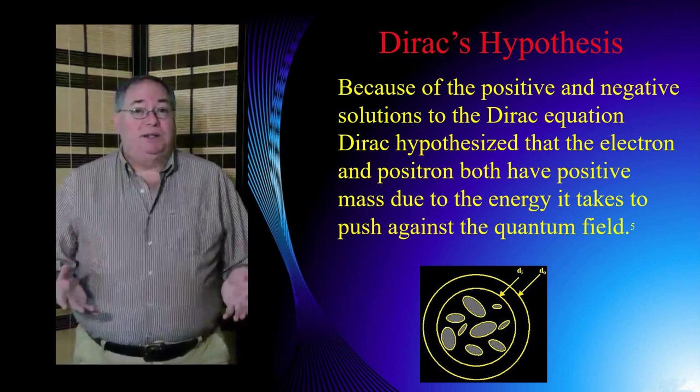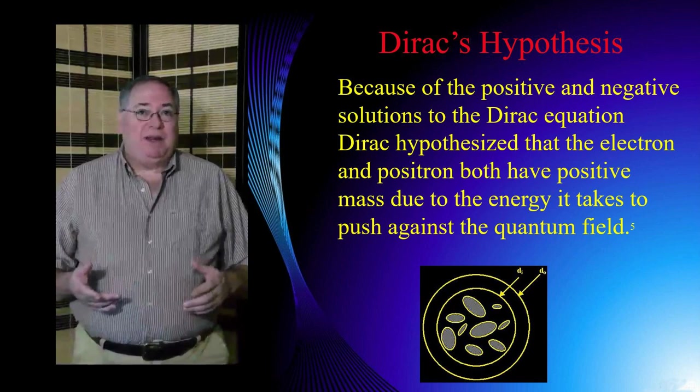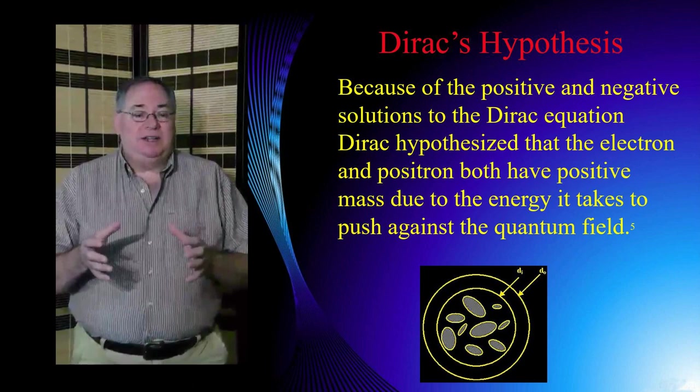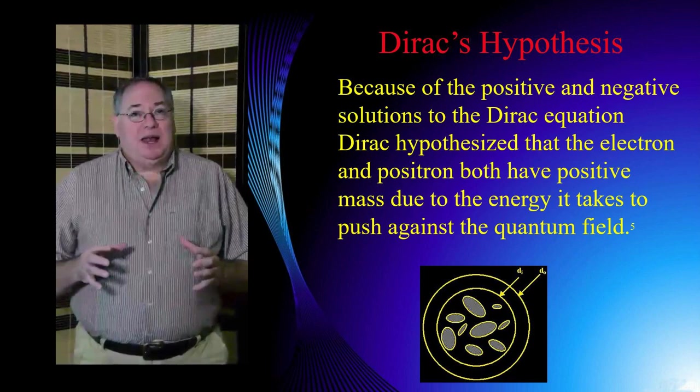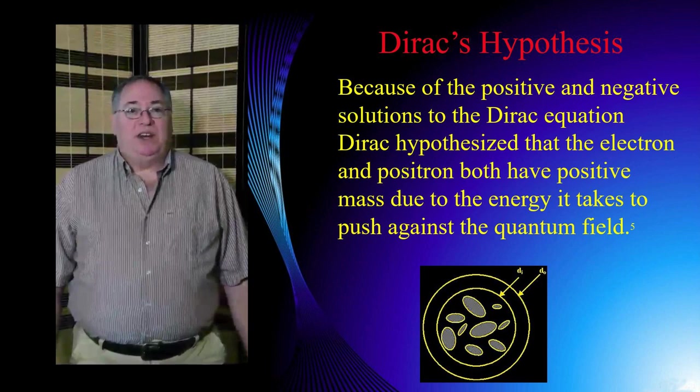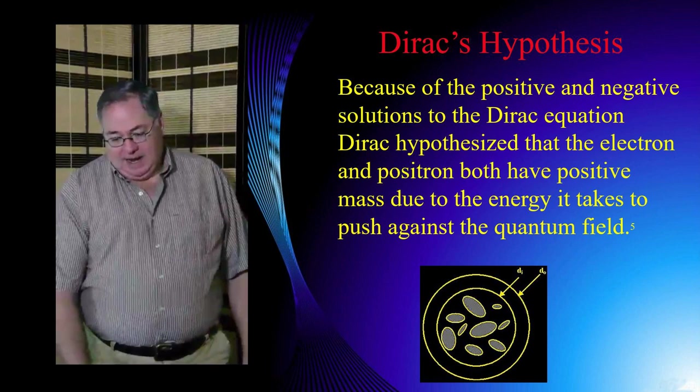So Dirac was faced with the question: what is this mass? Where does mass come from? And he came up with the idea back in 1930 that maybe the positron and electron get their mass because they have to push against the quantum field, his version of it, which we call the Dirac Sea. And so that was an early attempt to figure out the cause of mass that most people don't pay much attention to. But I thought it was interesting and decided to follow up on it.